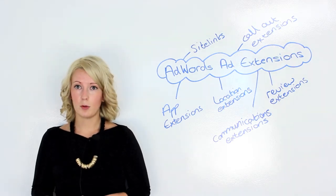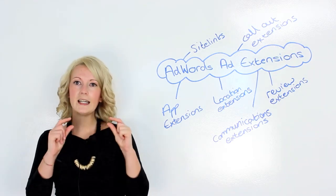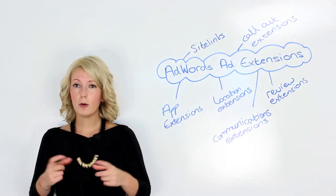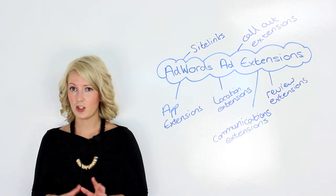This is where call-out extensions can become useful. So there are little slots of text that appear underneath your ad and they look similar to site links, but they're a lot shorter and they aren't linked, so they're just text.